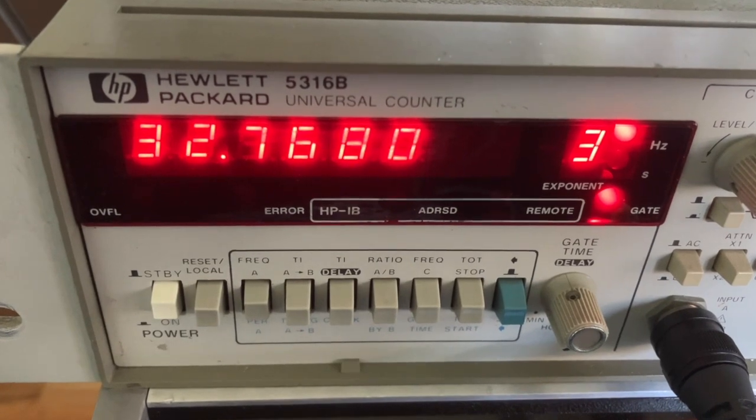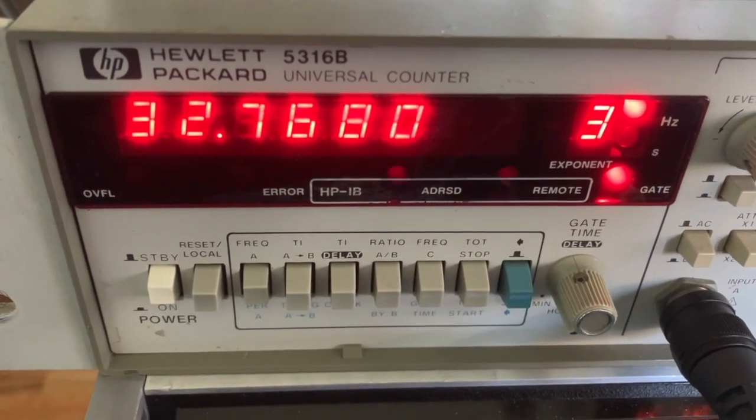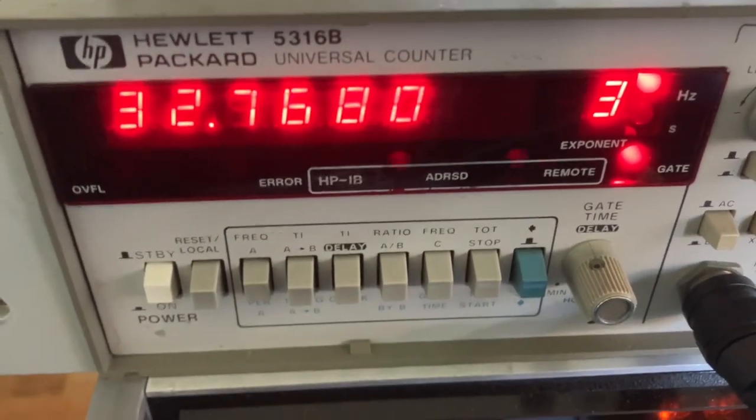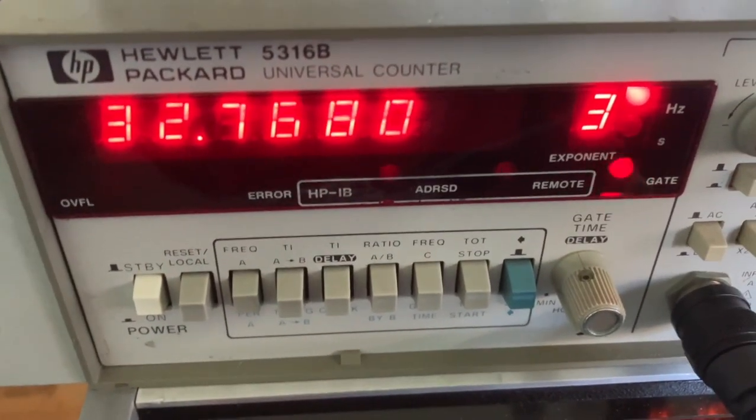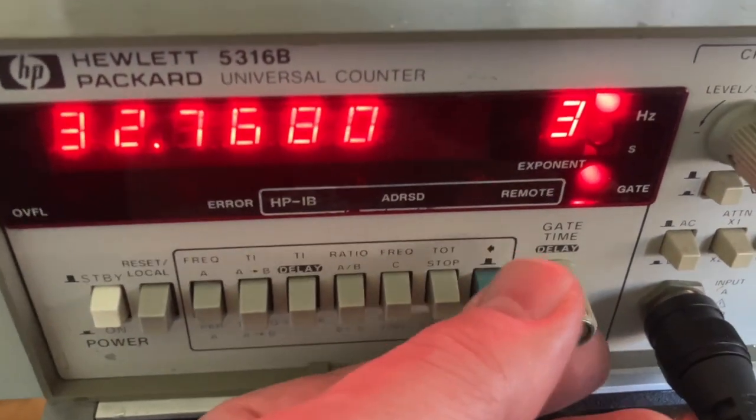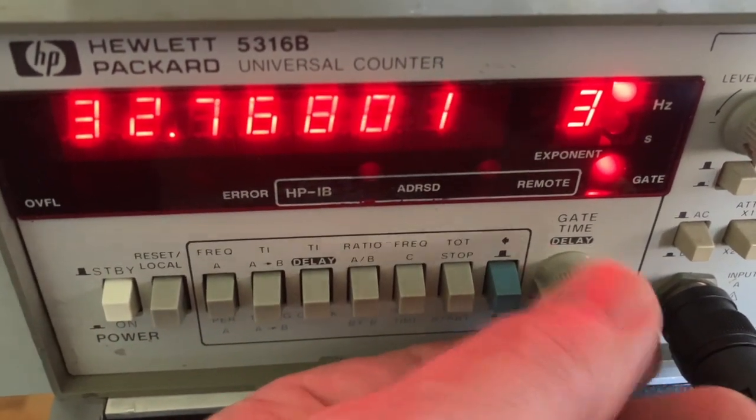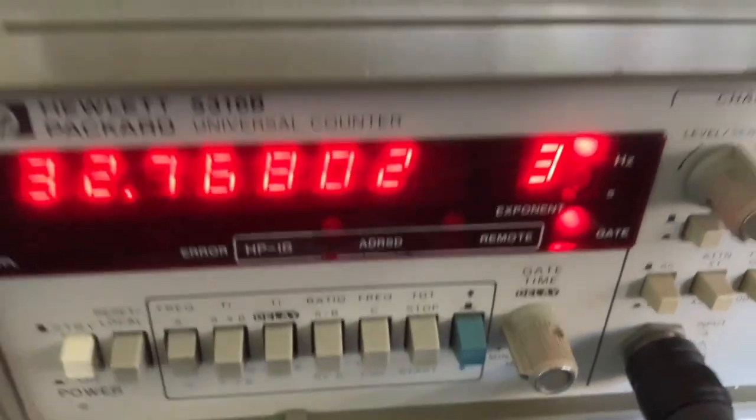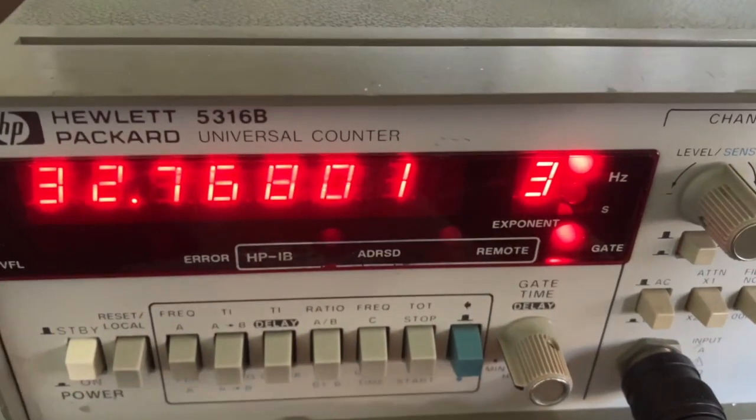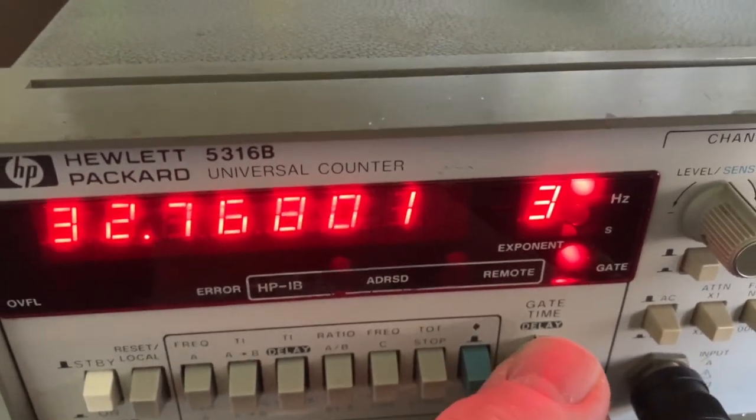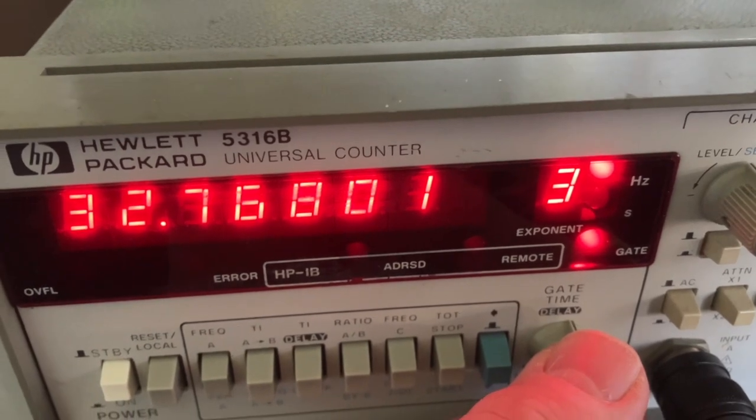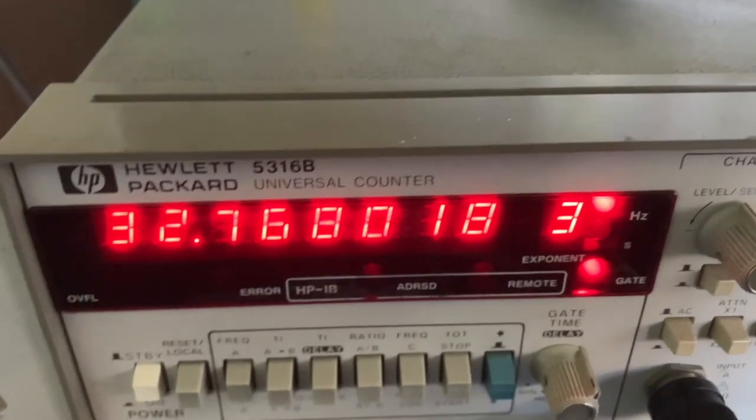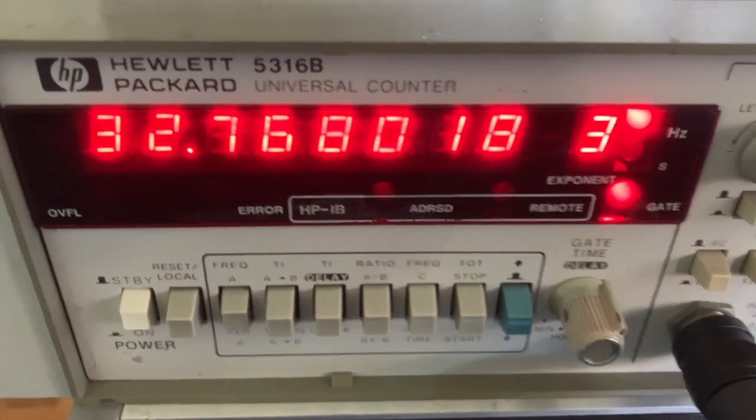Here's the little oscillator module feeding the 5316B counter. Again, we can get much more resolution on this counter, and I can increase the gate time to get more digits, so it's pretty much spot on. And again, if I want to increase the gate time a little more, I can get that last digit of precision, more or less. So the nice thing about this counter is it gives you more resolution.